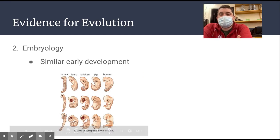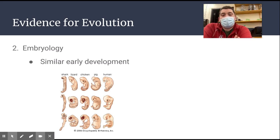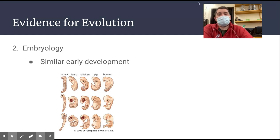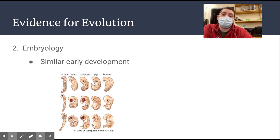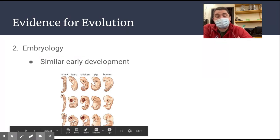Our second piece of evidence for evolution comes from the study of embryology — the study of development of organisms after they're fertilized and grow through their adult stage. The cool thing about embryology is that when we look at a shark, lizard, chicken, pig, and human, when we are developing before we're born, the embryos actually look pretty similar. We all have gills, tails, eyeballs, and heads. It's only after a significant amount of time developing that we start to see differences — it starts to look like a human, a pig, a bird, and so on.